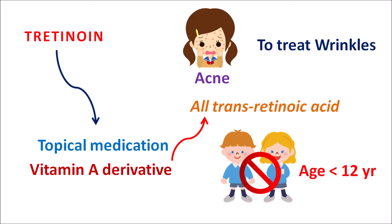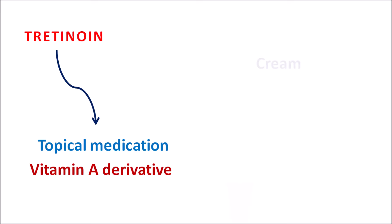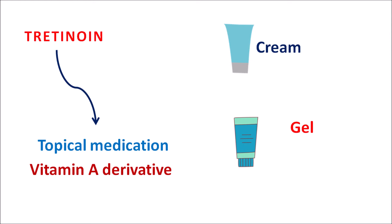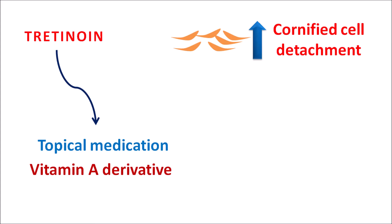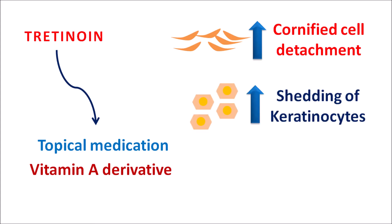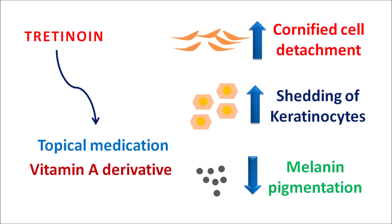Generally, acne involves cornification of epithelial cells and excessive keratinization. In such conditions, Tretinoin can be used, and it is available as a cream as well as a gel. This gel is available in a microsphere form which increases absorption into the skin. These formulations are available in different concentrations. When Tretinoin is topically applied, it can increase the detachment of cornified cells, reducing skin eruptions associated with acne, and also increase the shedding of keratinocytes, further reducing acne proliferation. With use of Tretinoin, decreased melanin pigmentation can be observed due to increased turnover of keratinocytes. Because of all these actions, Tretinoin can reduce acne formation as well as wrinkle formation.